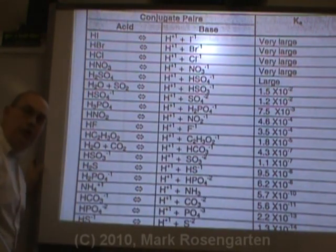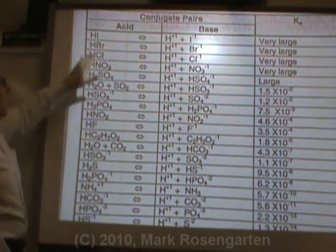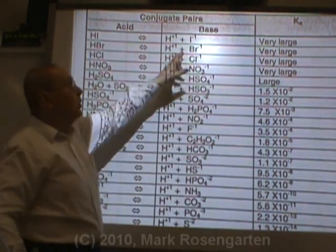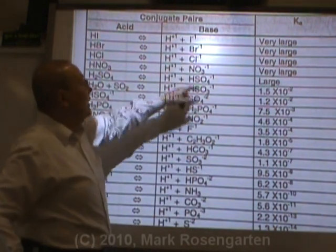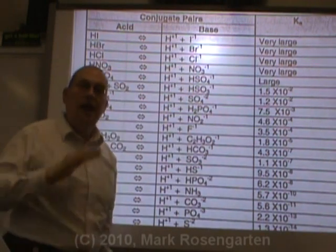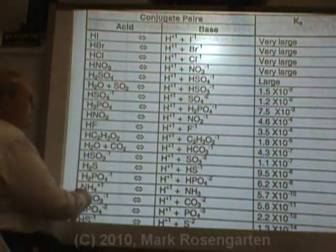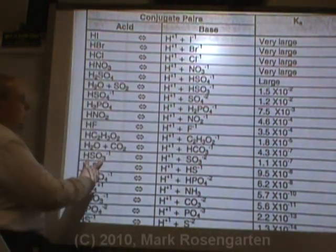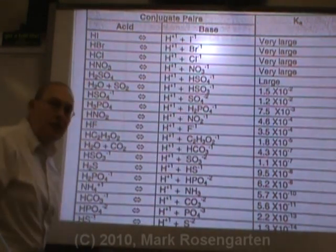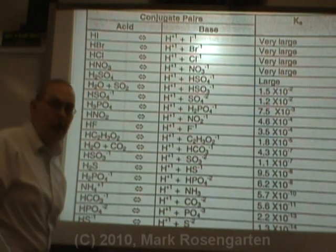If a substance is only on the acid side, then it's only an acid. If it's only on the base side — like Br- and Cl- — it's only a base. But if you can find it on both sides of the table, that means it can act as either an acid or a base, and therefore it's amphiprotic.